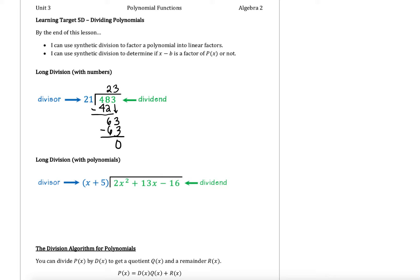We learned about long division back in elementary school, and what we're going to focus on is the vocabulary that goes with it. So 21 is what we call the divisor, and 483 is what we call the dividend. What do we call the number we get left with when we finish the subtraction? That's called the remainder. And then the other term we need is for the 23 — does anybody remember what the 23 is called? 23 is what we call the quotient.